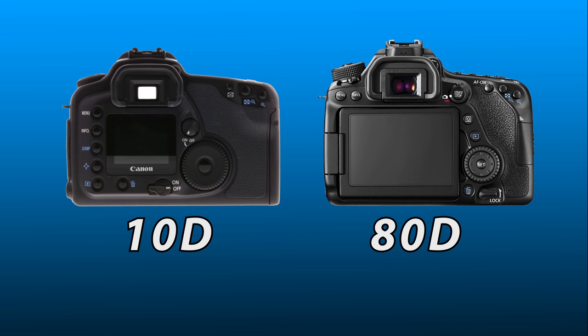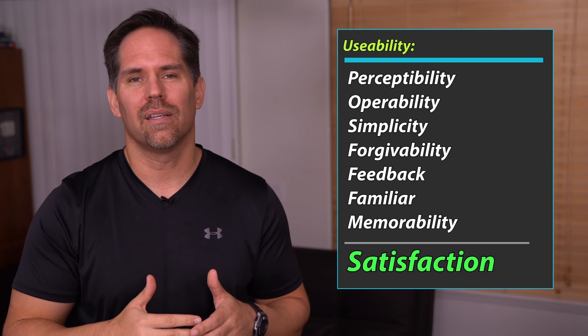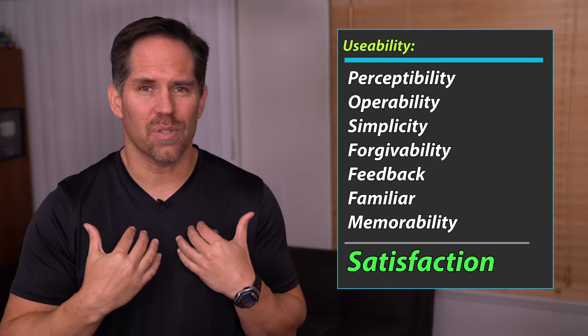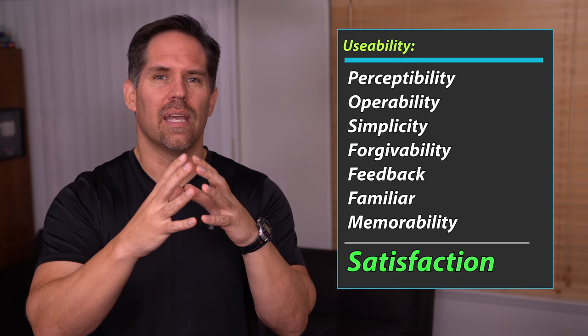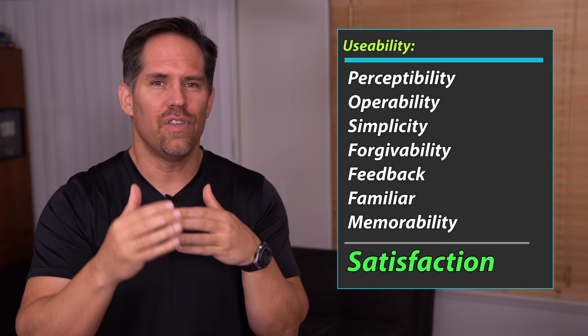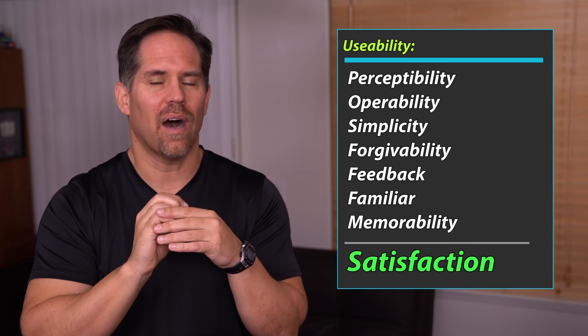So when we take something like the 80D and compare it to the EOS R, look at the stark contrast. Where is the familiarity? Where is the perceptibility? The ease of use in terms of operation? I demonstrated left eye versus right eye dominant. How forgiving is it when you bump it? These are the problems that I had with the EOS R. In summary, the usability of a product is the ease of use — it goes far beyond personal preference. This is something that can actually be measured. Take all those things together and they should give an overall satisfaction.